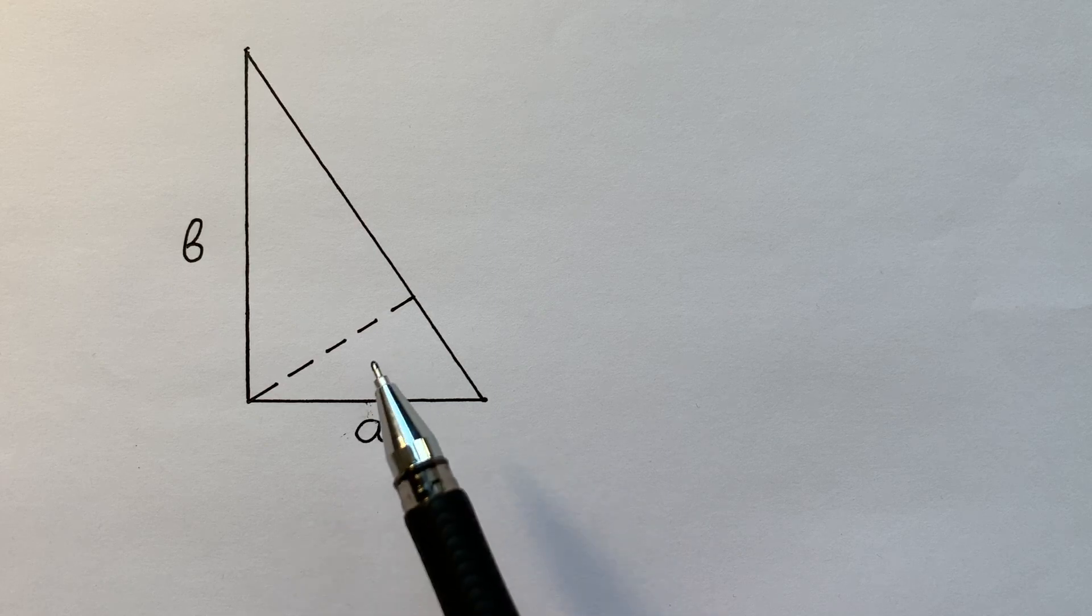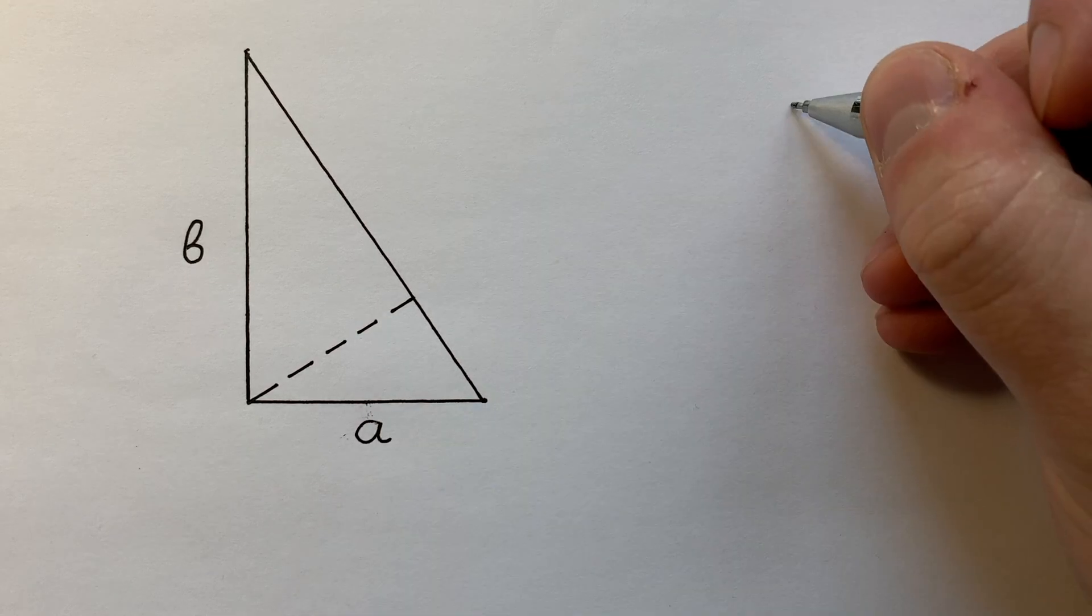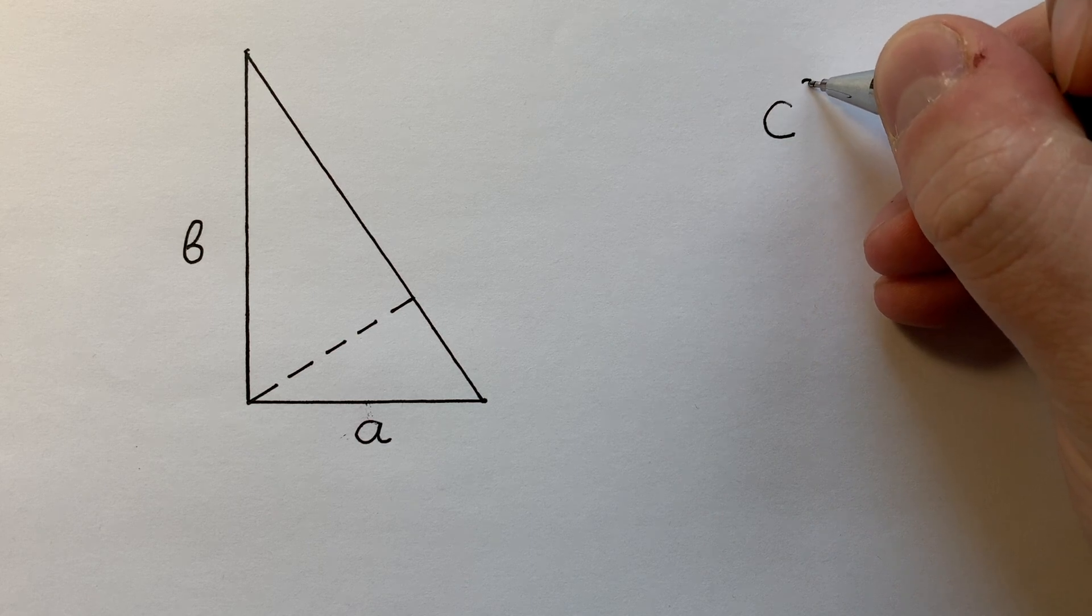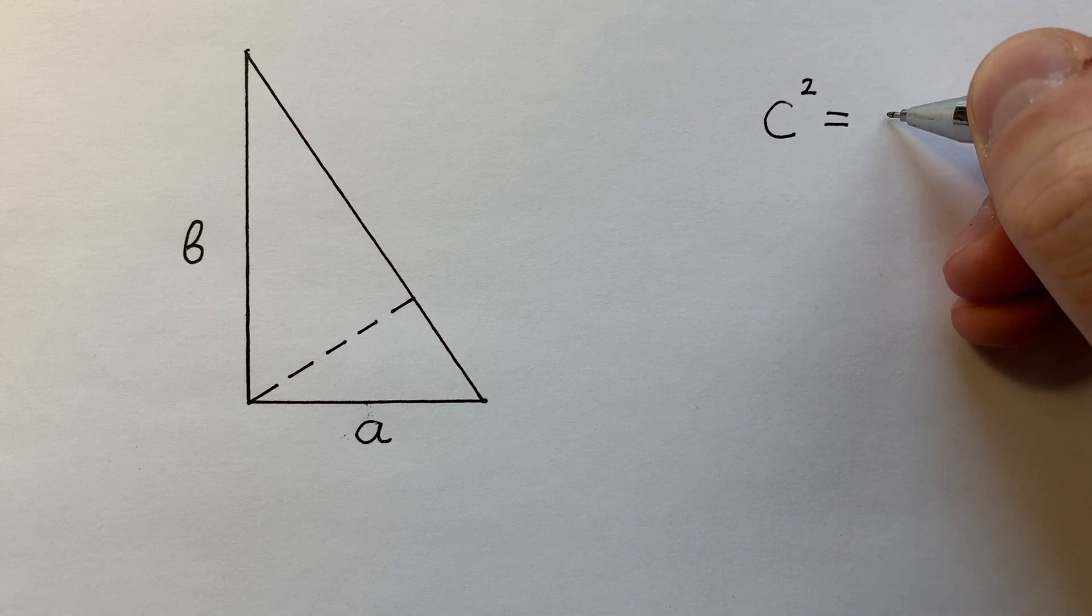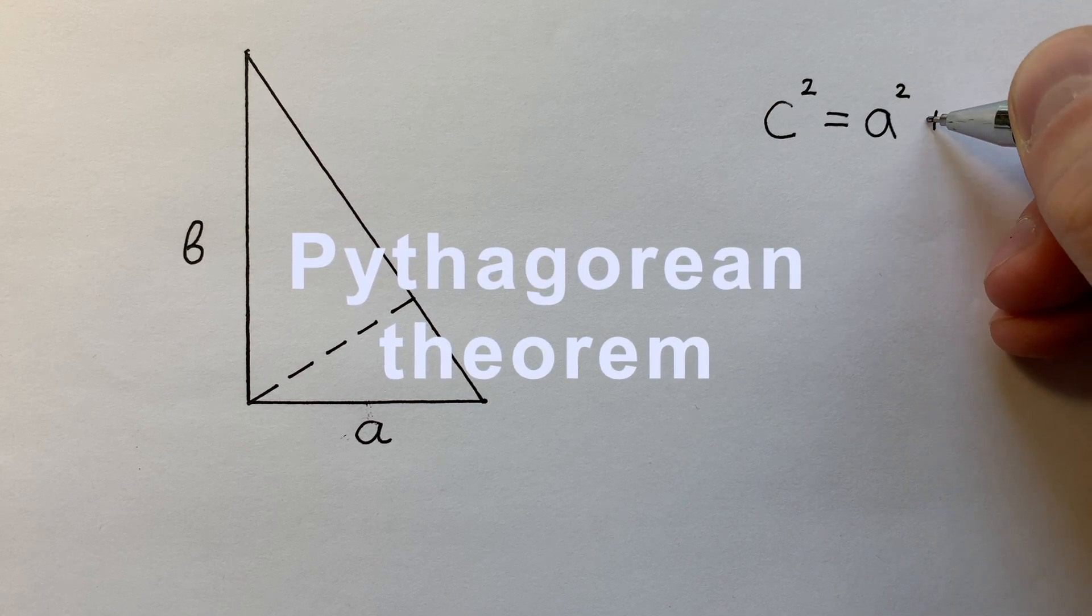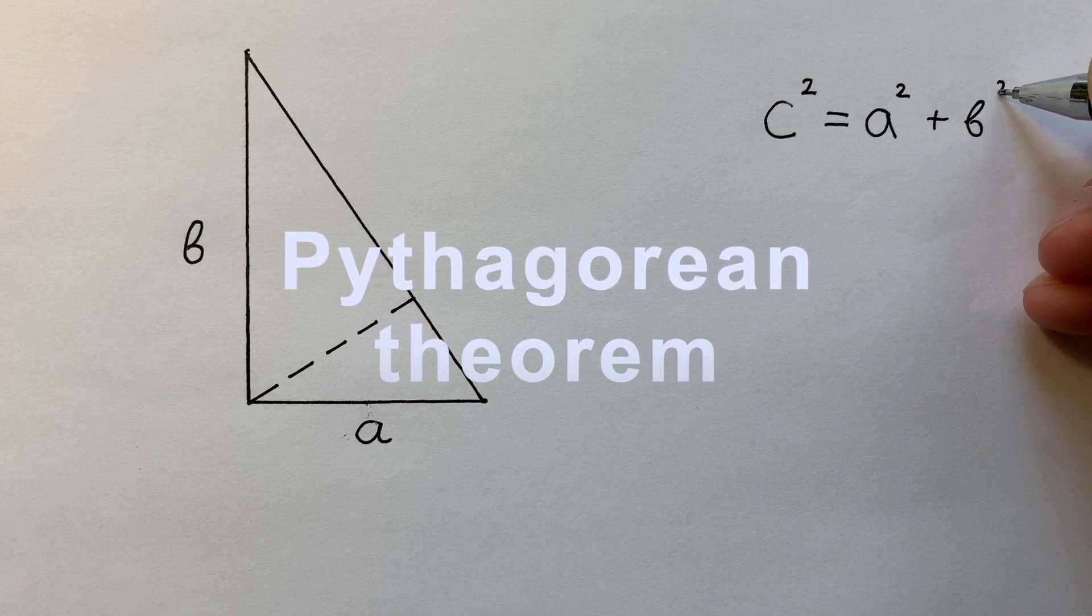Everybody knows the basic formula of a right triangle. C, the hypotenuse, to the power of 2 equals A to the power of 2 plus B to the power of 2.